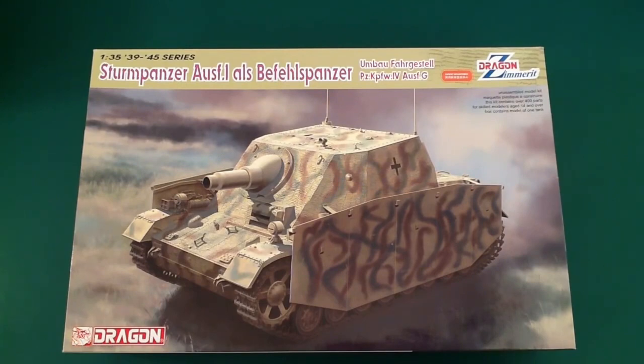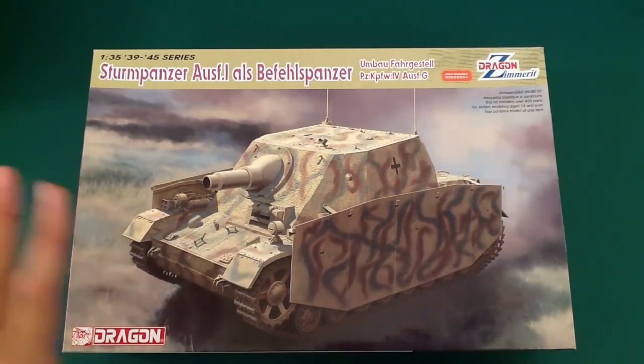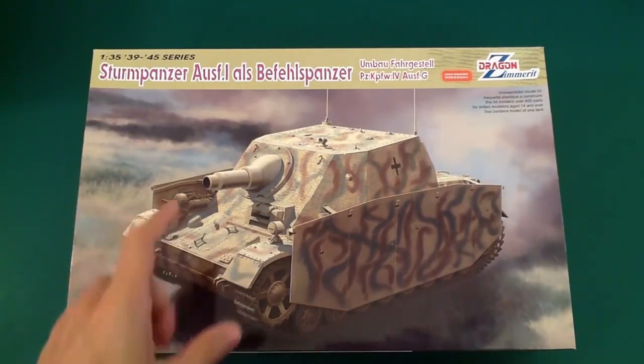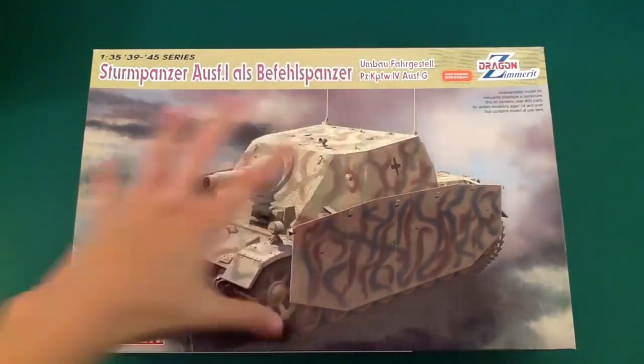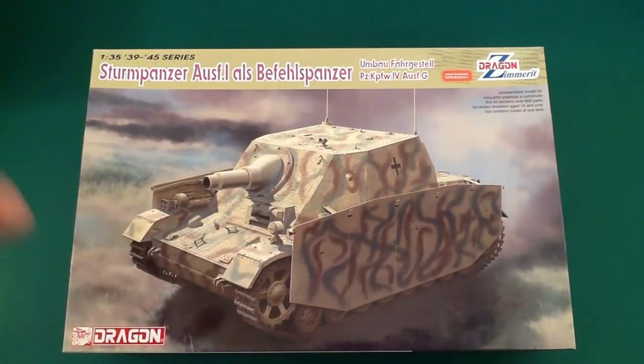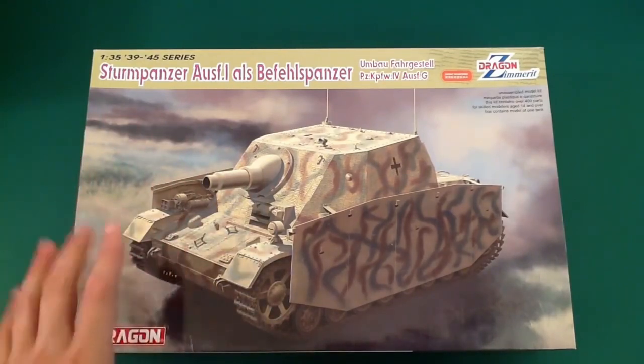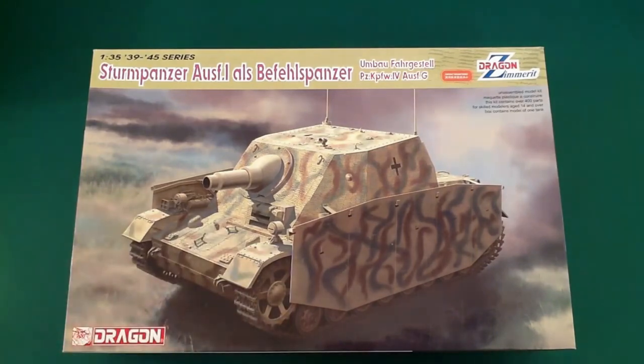Okay, this is a strange one. It's basically a command Brumbar. The fact that it was converted from a G, Panzer IV G, is different than other Brumbars. It has Zimmerit, and I'm not sure where it falls into the early-mid type thing. The family tree of this thing was in 08, there was the initial tooling, which was a mid.